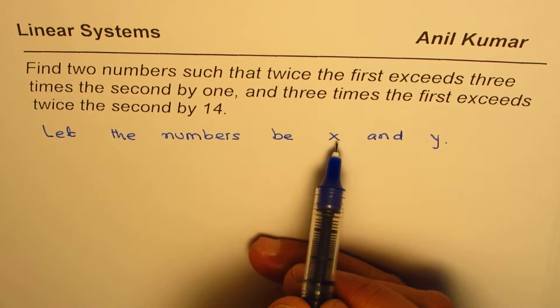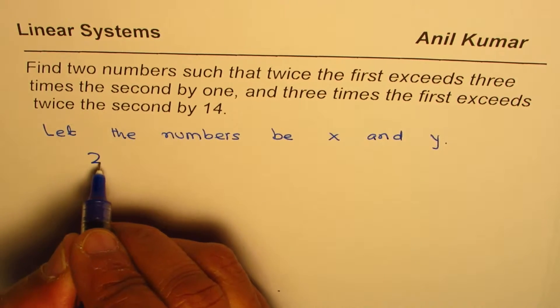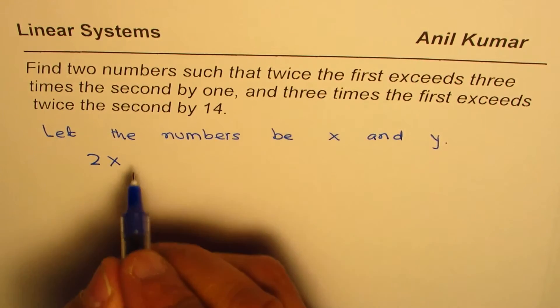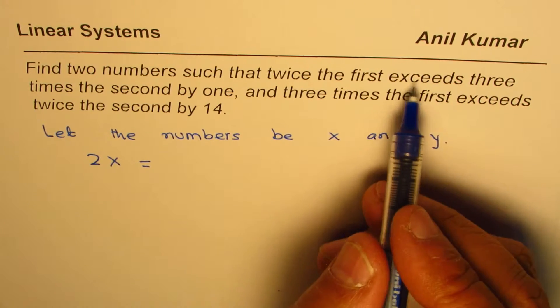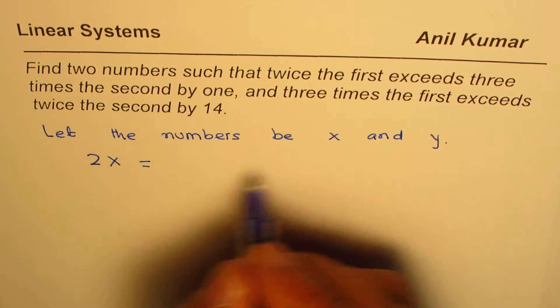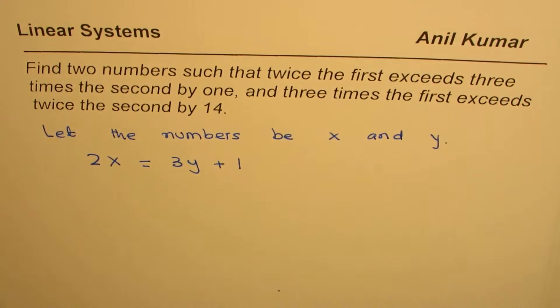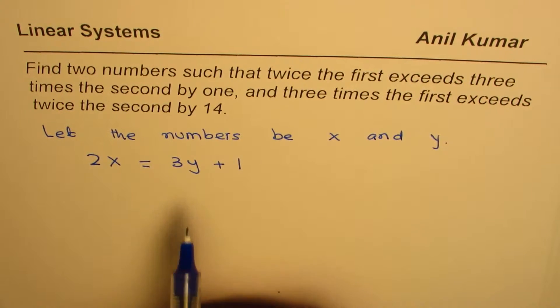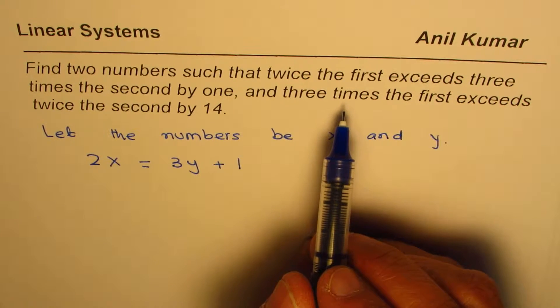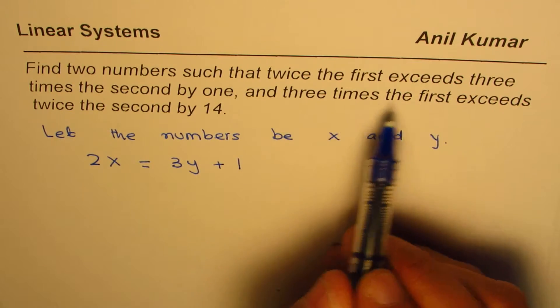That means the first one is greater. Twice the first exceeds three times the second by one, so 2x = 3y + 1. From that statement we get one equation. Now let's read the next statement: three times the first...